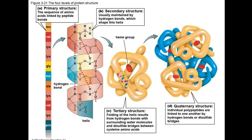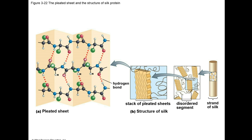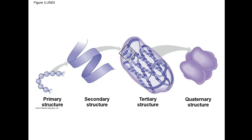All proteins will have the primary, secondary, and tertiary structure. Not all proteins have the quaternary level of structure. This slide is showing an example of a beta pleated sheet, which makes up silk. The primary structure is a linear sequence of amino acids. The secondary structure is either coiling to form a helix or a beta pleated sheet through hydrogen bonding. Tertiary structure is when R groups react with one another, allowing the protein to form a 3D structure and fold. Quaternary structure is when multiple folded proteins stick together.